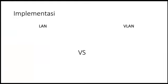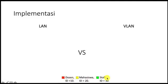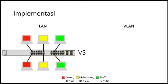Kita akan langsung ke implementasinya LAN dengan VLAN. Misalkan terdapat perbandingan, yaitu ada tiga buah network: dosen, mahasiswa, dan staff. Dosen diberikan warna merah, mahasiswa warna kuning, dan staff warna hijau. Yang memiliki ID masing-masing: dosen adalah ID 10, mahasiswa ID 20, dan staff ID 30. ID-ID ini nanti yang akan dimasukkan ke dalam port yang ada di dalam switch.